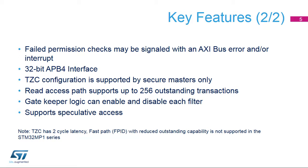TZC is programmed via a 32-bit APB4 interface. TZC configuration is supported by secure masters only. Read access path supports up to 256 outstanding transactions to DDR. Some gatekeeper logic is used to enable and disable each filter. TZC can support speculative accesses. Note, TZC has two-cycle latency. Fast path with reduced outstanding capability is not supported in the STM32 MP1 series.